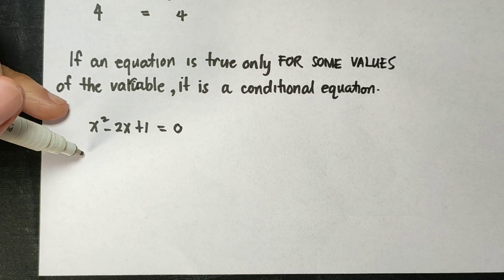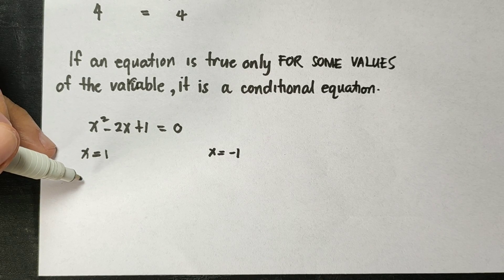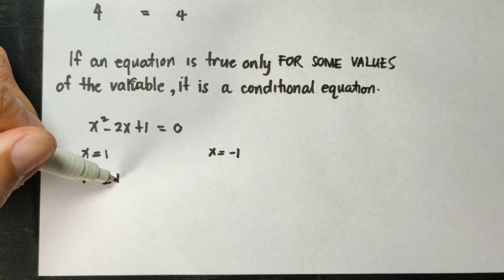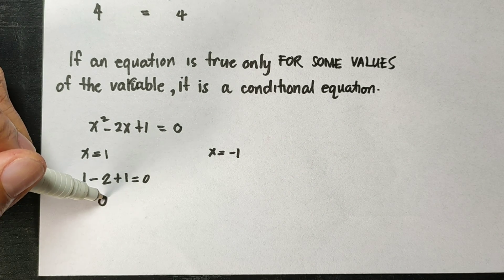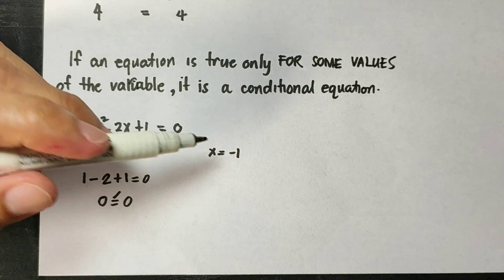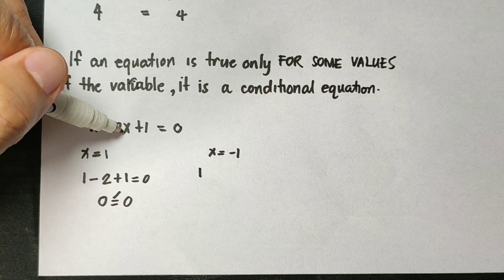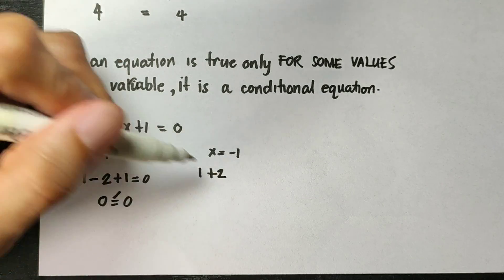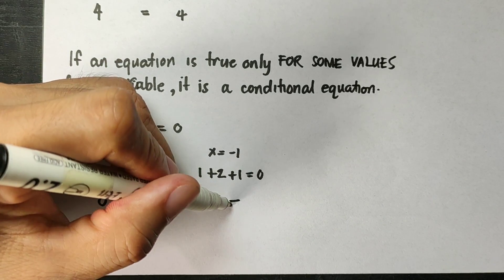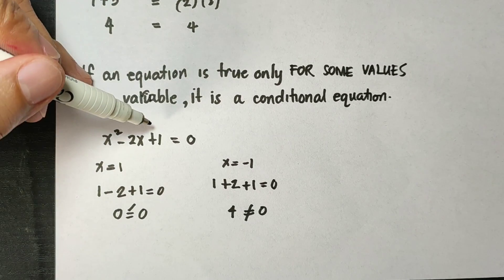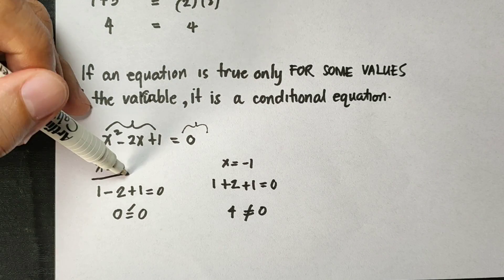Let's check. When x is 1: 1 times 1 is 1, minus 2 times 1 is 2, plus 1 equals 0 — that gives negative 1 plus 1 is 0, equals 0. But when x is negative 1: negative 1 times negative 1 is positive 1, negative 2 times negative 1 is positive 2, plus 1 equals 4. And 4 is not equal to 0. So this expression is only equal to zero when x is 1.